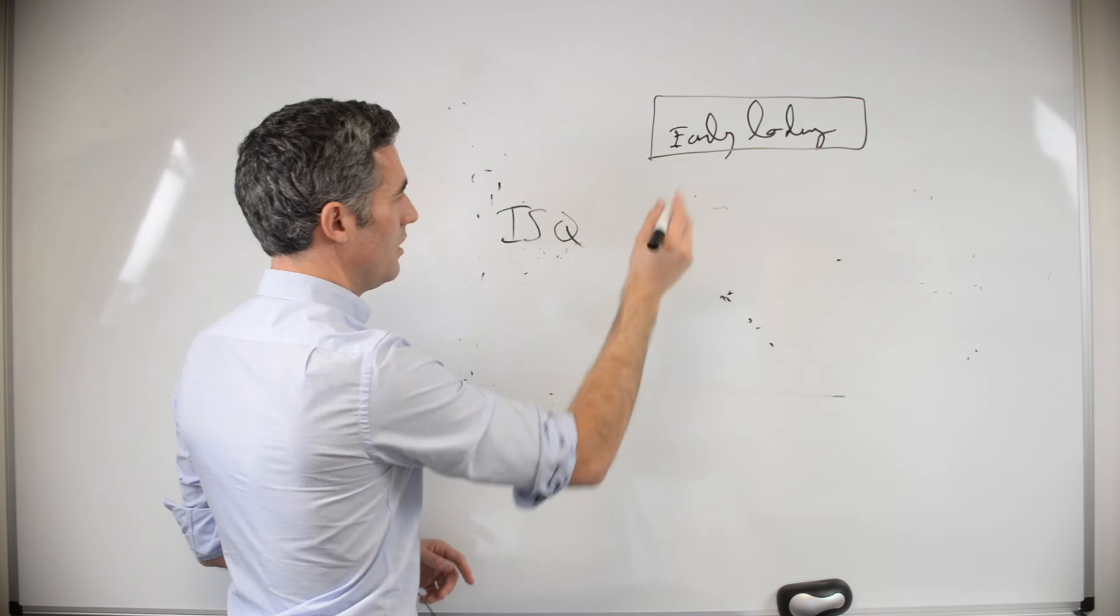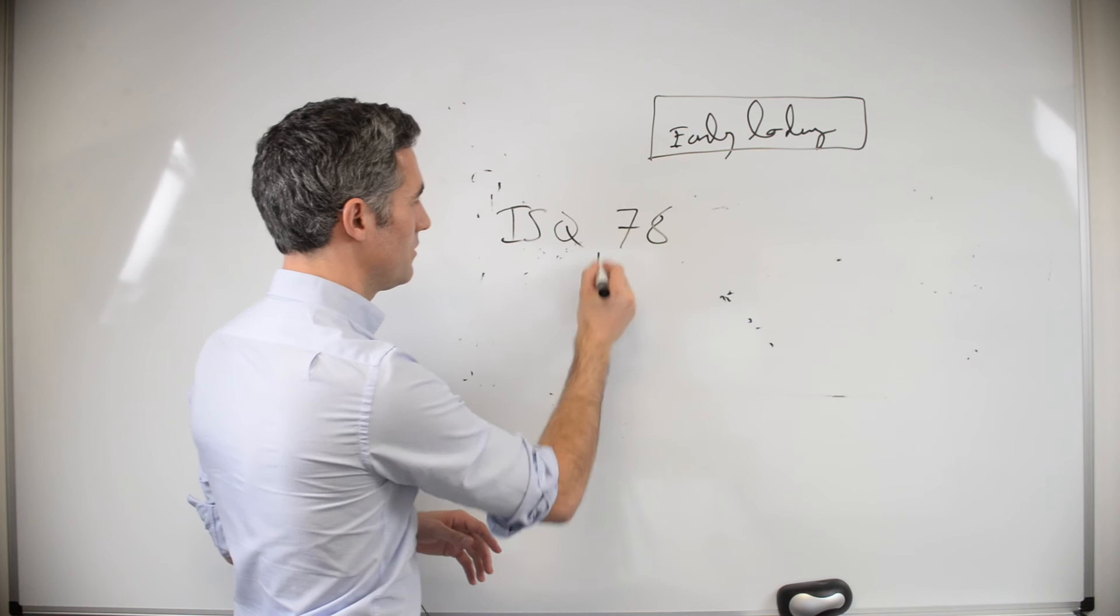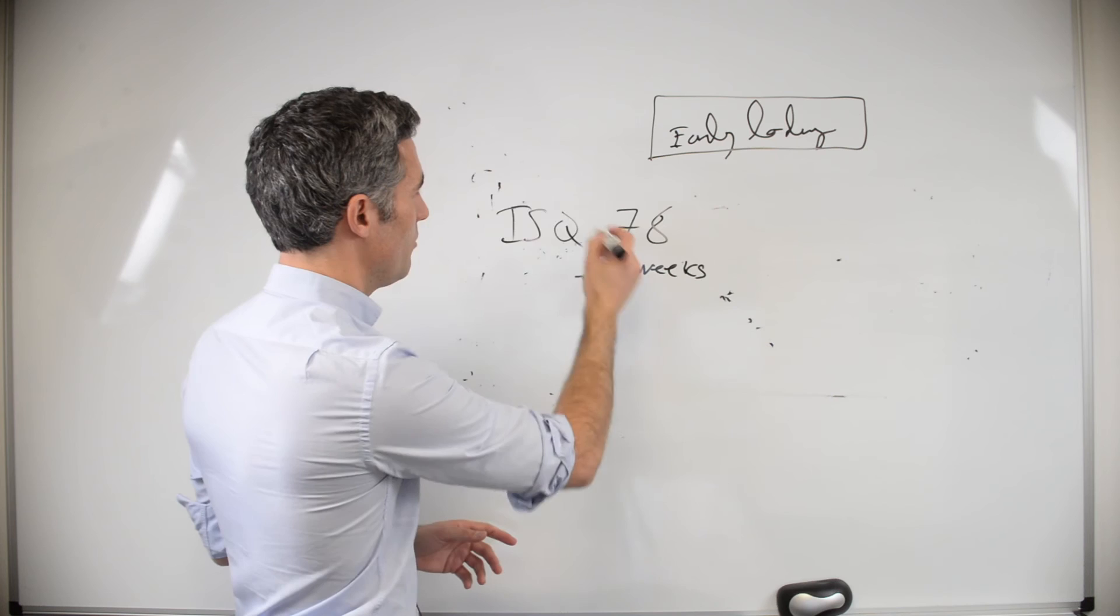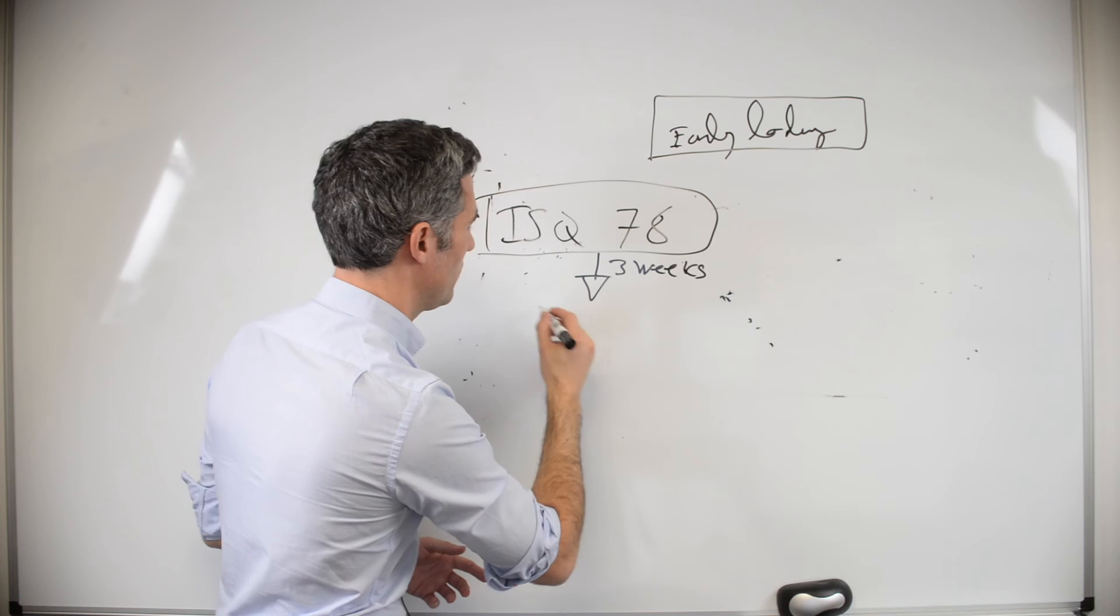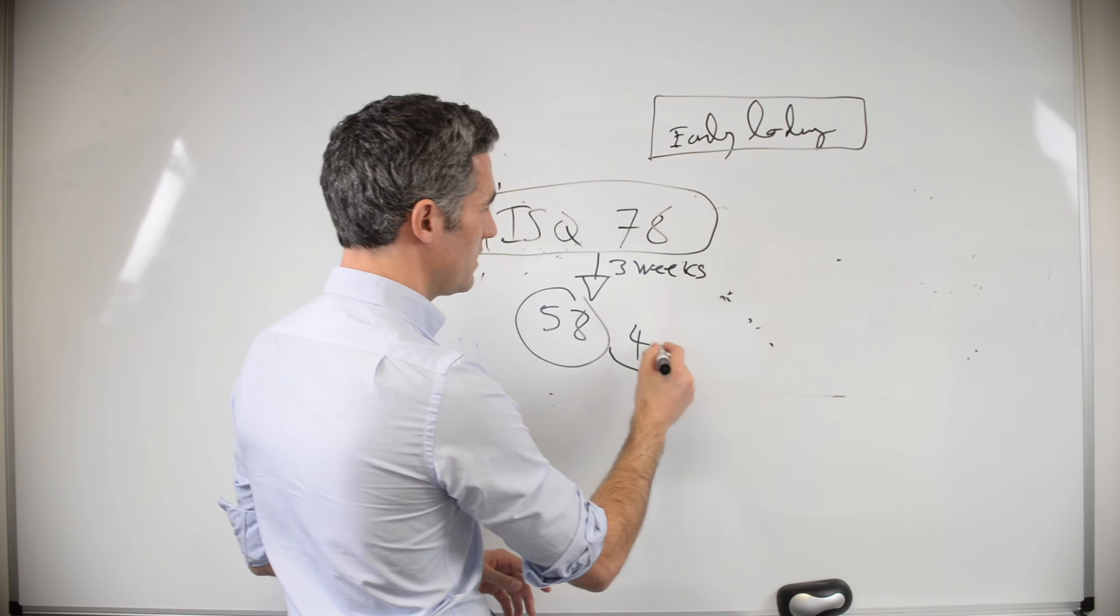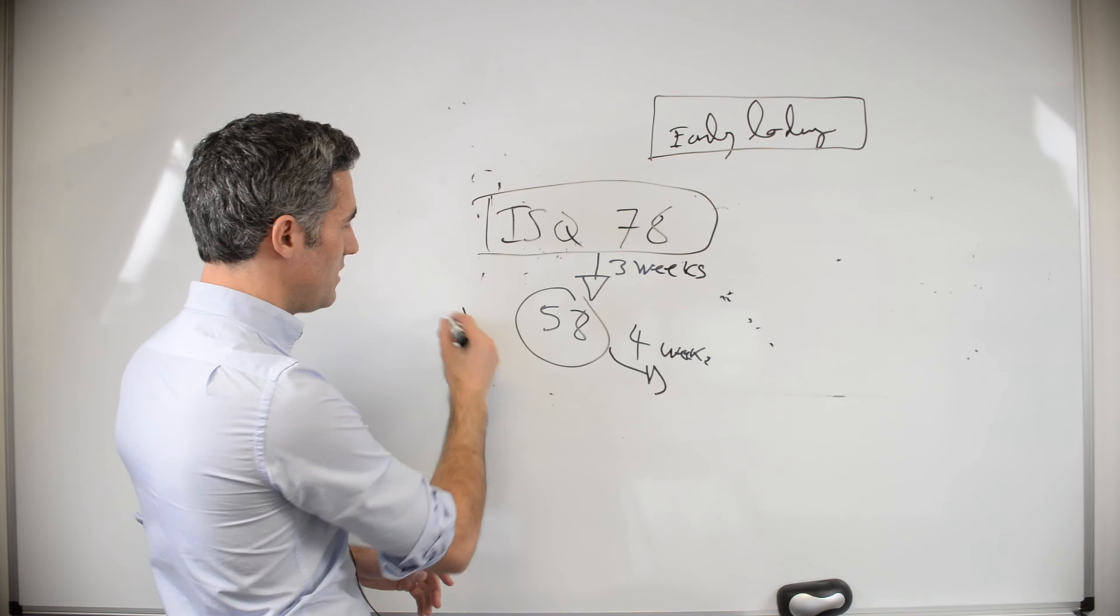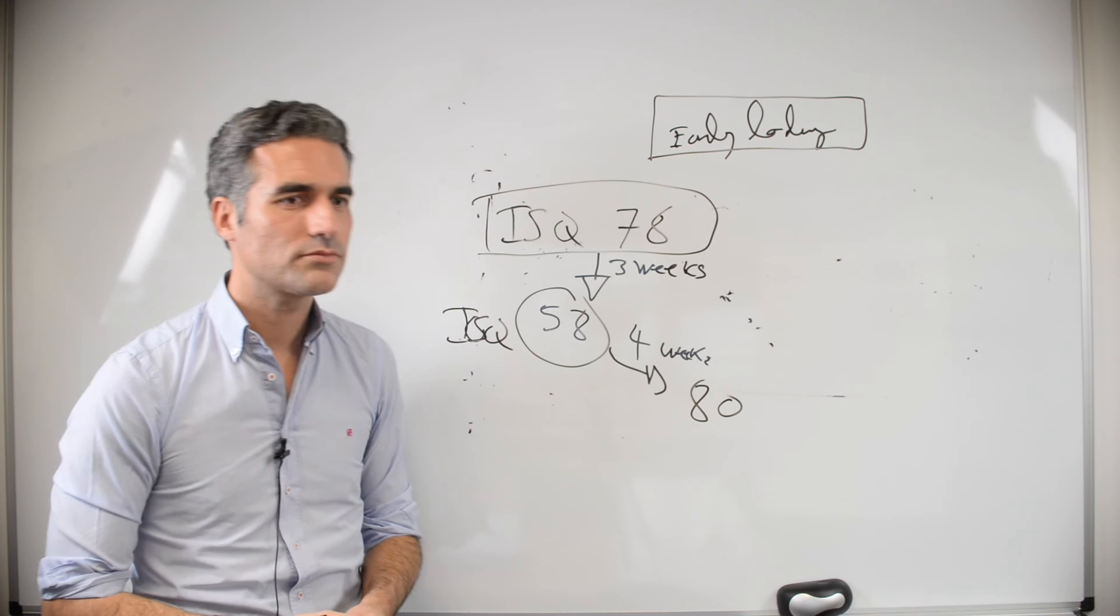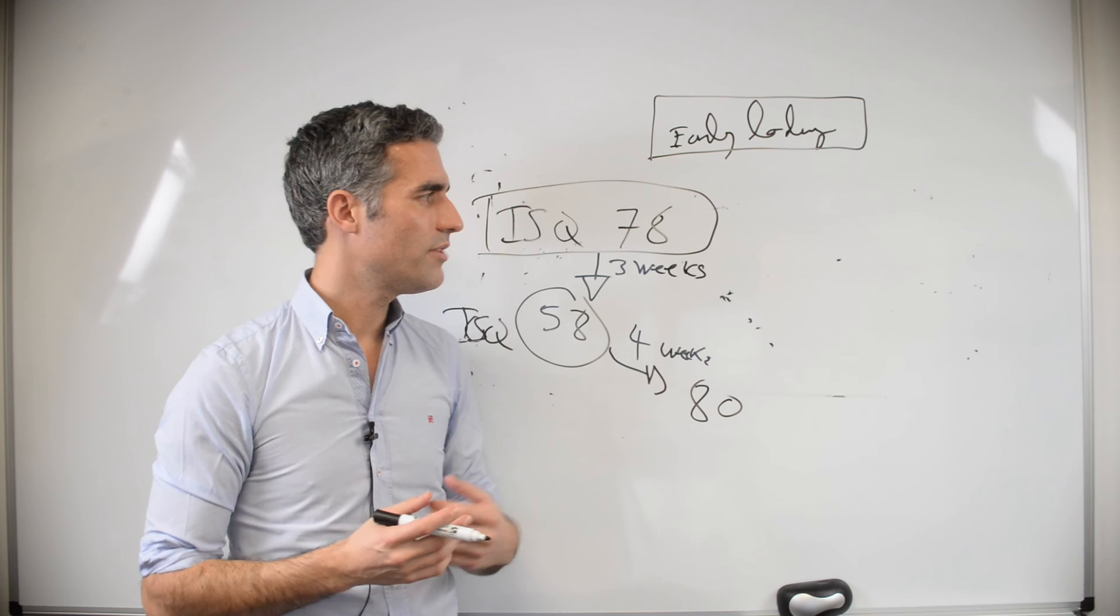We can have an ISQ of, for example, 78, and we measure the ISQ three weeks later. We know from the study from Berglund and Emerson 2003-2004 that three weeks later, we will have maybe, for example, it will decrease to 58—it will be a huge jump. But we wait a little bit more, four weeks, and we see that this ISQ value is going to rise again and it's going to come back to their original values.